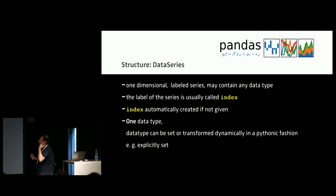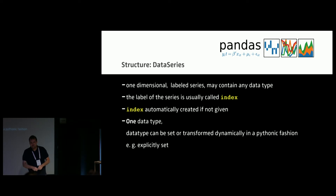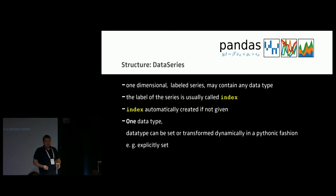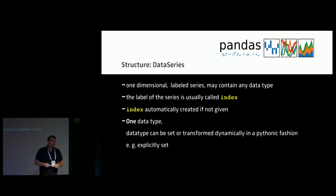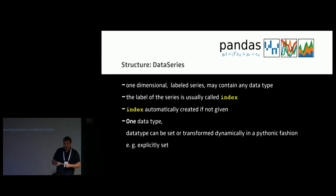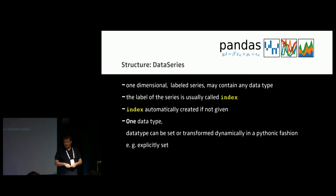A data series is a one-dimensional labeled series — data and an index. The index is not just numerical; it can also be labels. You can put names on it. The index is automatically created when you read in the data, but you can replace it as well. The data type can be set while you import and can also be transformed to another type.